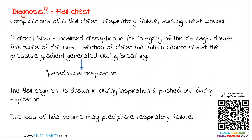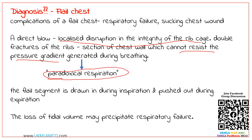When there is a direct blow to the chest, it may result in a localized disruption in the integrity of the rib cage. Most commonly, double fractures of the ribs result in a section of chest wall that cannot resist the pressure gradient generated during breathing, and the ultimate result is paradoxical breathing.